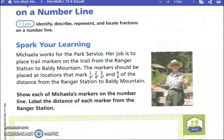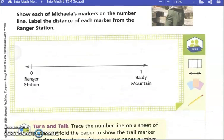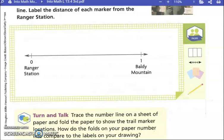Show each of Makaylo's markers on a number line and label the distance of each marker from the ranger station. We've used number lines lots of times — they're kind of like a river. This one shows zero at the ranger station as the starting point, and one at Baldy Mountain on the other end. One represents the place where she wants to end up — once you get there, you have hiked the whole trail. So one whole.